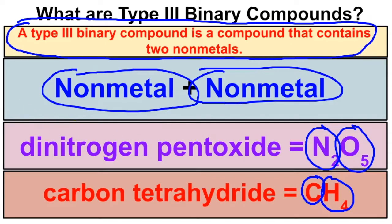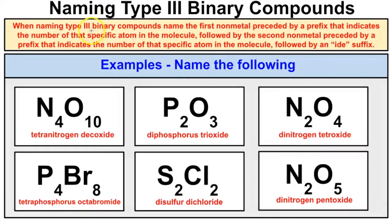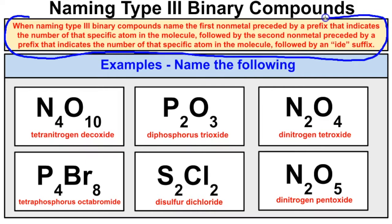Now let's look at the rules for naming type 3 binary compounds. Name the first non-metal preceded by a prefix that indicates the number of that specific atom in the molecule, followed by the second non-metal preceded by a prefix indicating its count, followed by an -ide suffix. To do this, we have to memorize a list of prefixes.